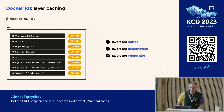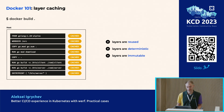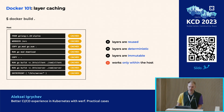Let's summarize the properties that such a build has. Layers are reused between builds. Layers are determined by the previous layer, Dockerfile instruction, and files used from the build context. Layers are read-only and immutable. Docker is responsible for managing parallel builds and cache on the host. These are nice properties, but they only work per host and don't scale to a group of runners in CI/CD.